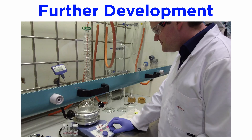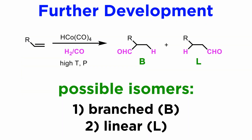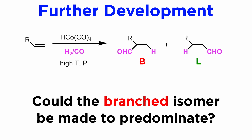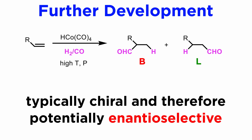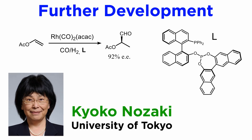In addition to its importance in the chemical industry, hydroformylation has attracted the attention of synthetic organic chemists, who have adapted this reaction towards the synthesis of complex molecules. Chemists have been fascinated by the linear selectivity of the reaction and wondered whether, under suitable conditions, branched products can be made to predominate. The branched products are in most cases chiral, and therefore the possibility of enantioselective synthesis arises. One such example is from the labs of Professor Kyoko Nozaki from the University of Tokyo. She has shown that olefins substituted with polar substituents tend to give some branched selectivity, and she has been able to optimize the ligands to achieve complete regioselectivity, and in some cases excellent enantioselectivity using this ligand.